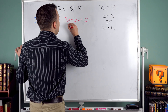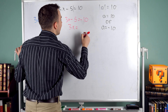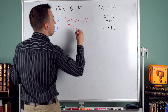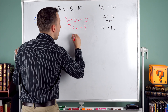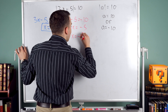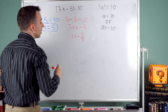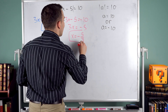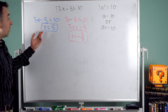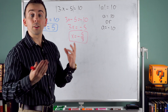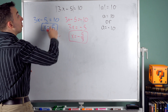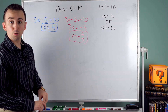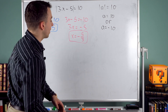So the other equation we solve is 3x minus 5 equals negative 10. Add 5 to both sides: 3x equals negative 10 plus 5, which is negative 5. Divide both sides by 3, and x equals negative 5 thirds. It's a fraction — maybe looks a little ugly, but that's okay. Those are the two solutions to this absolute value equation.